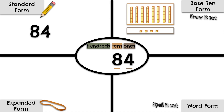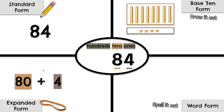Now let's show 84 in expanded form. We need 8 tens — we know 8 tens makes 80. Now we need 4 ones. We know that 80 plus 4 makes 84.